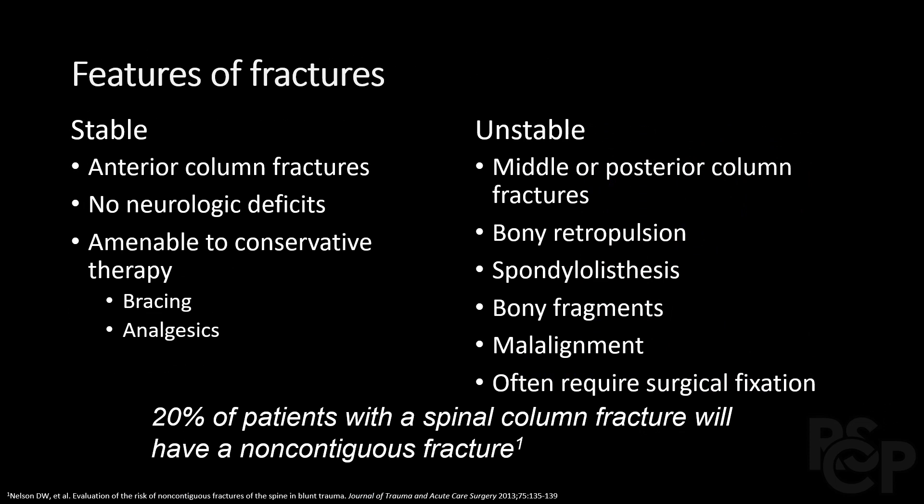Once you rule in a fracture, you need to decide whether it is stable or unstable. Typical features of stable fractures include isolated anterior column fractures with minimal to no exam findings; these patients are typically treated conservatively and require no intervention. Unstable fractures typically involve more than one column, particularly the middle and posterior columns. Other findings include bony retropulsion, in which bony fragments of the vertebral body are pushed back into the canal space.